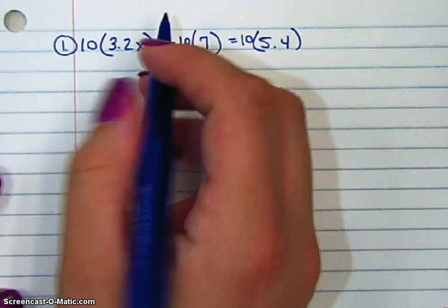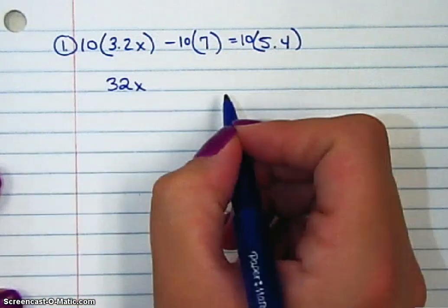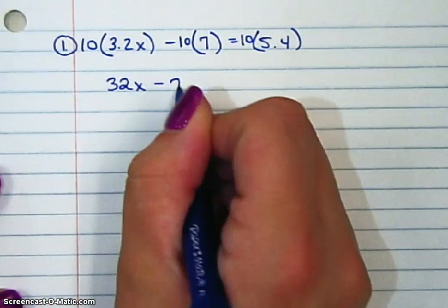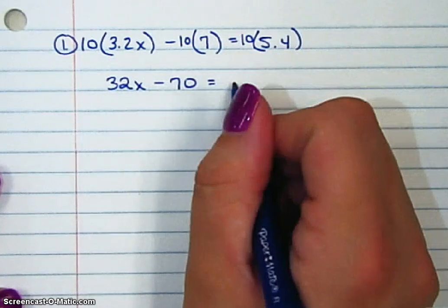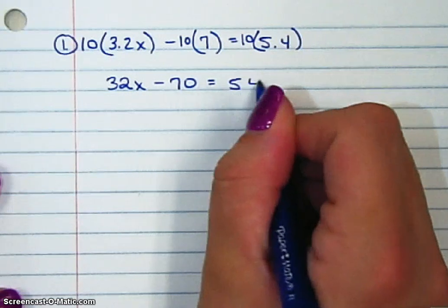So, 10 times 3.2 is 32x, 10 times 7 is negative 70, so you can put the minus, and 10 times 5.4 is 54.